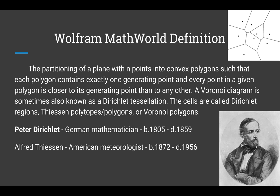The definition mentions Peter Dirichlet and Alfred Thiessen, after whom these diagrams are sometimes named. Dirichlet was a German mathematician whose work was similar but less specific regarding construction. Thiessen was an American meteorologist who used this structure for interpolation of measurements. Voronoi diagrams are also called Dirichlet tessellations or Thiessen polytopes.